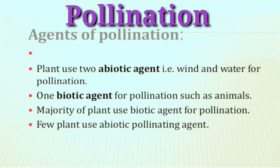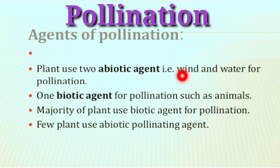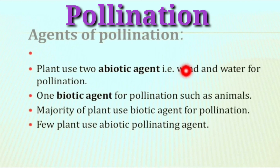In cross-pollination, we need an agent to perform the process. The agents of pollination are of two types: one is abiotic and another one is biotic agents. In abiotic agents, for example, wind and water are abiotic agents. They are considered as vectors for completing the process of pollination.